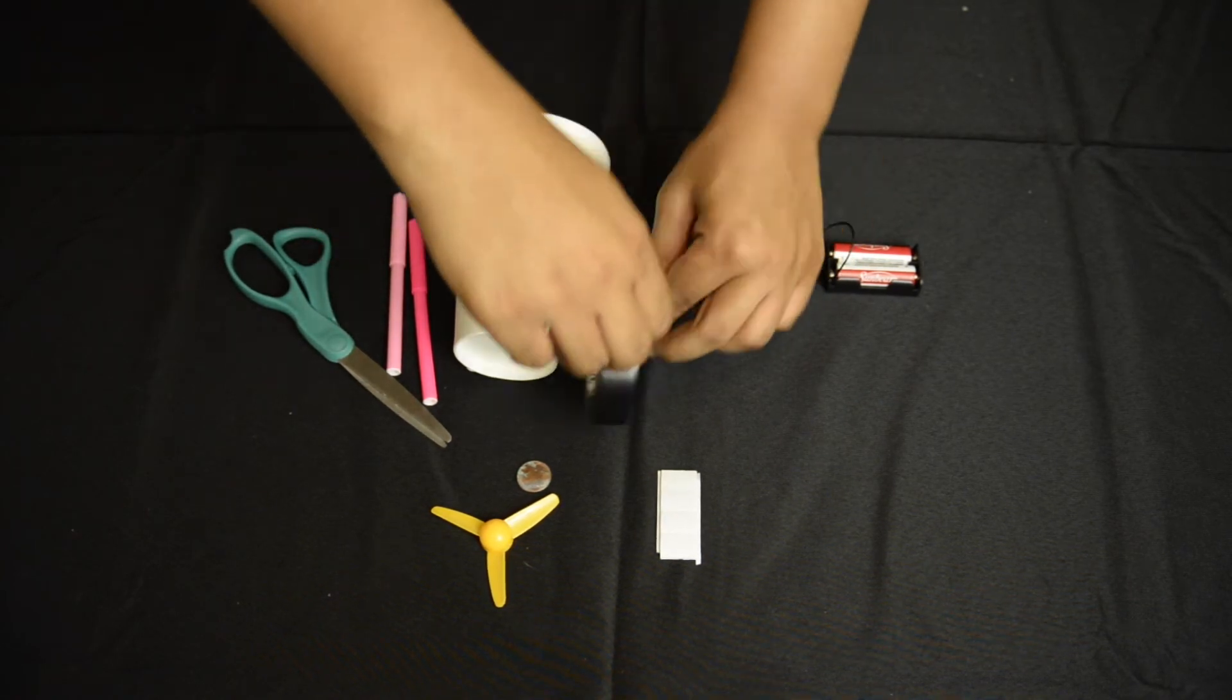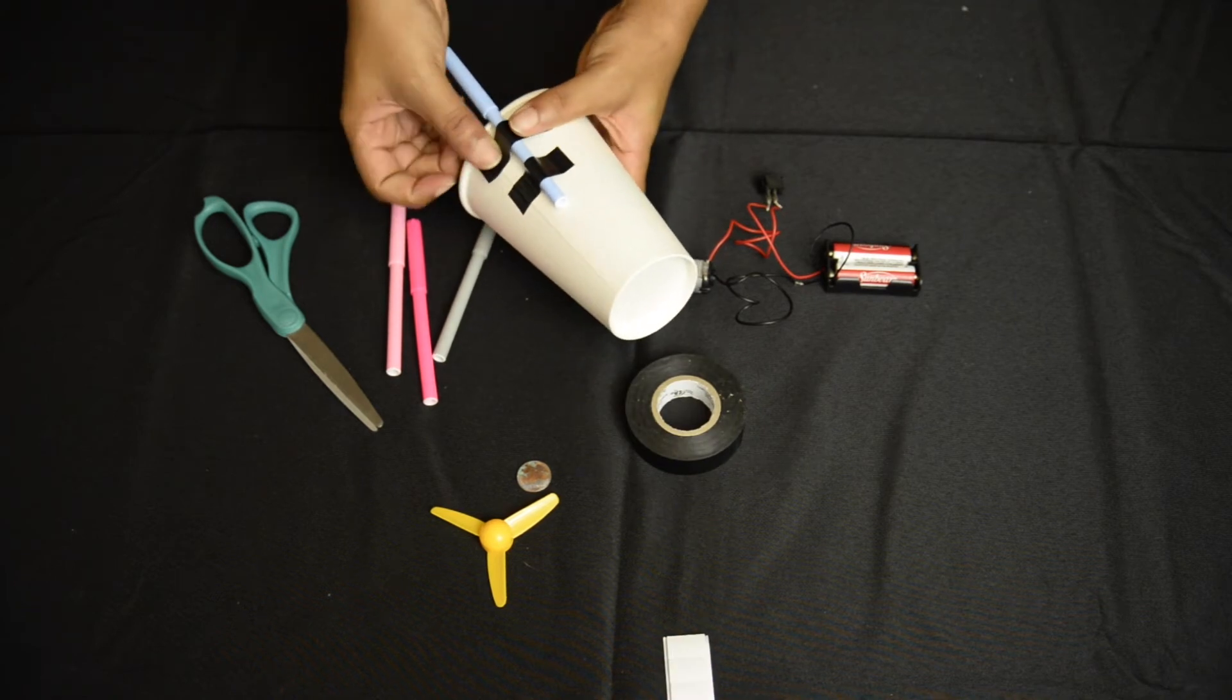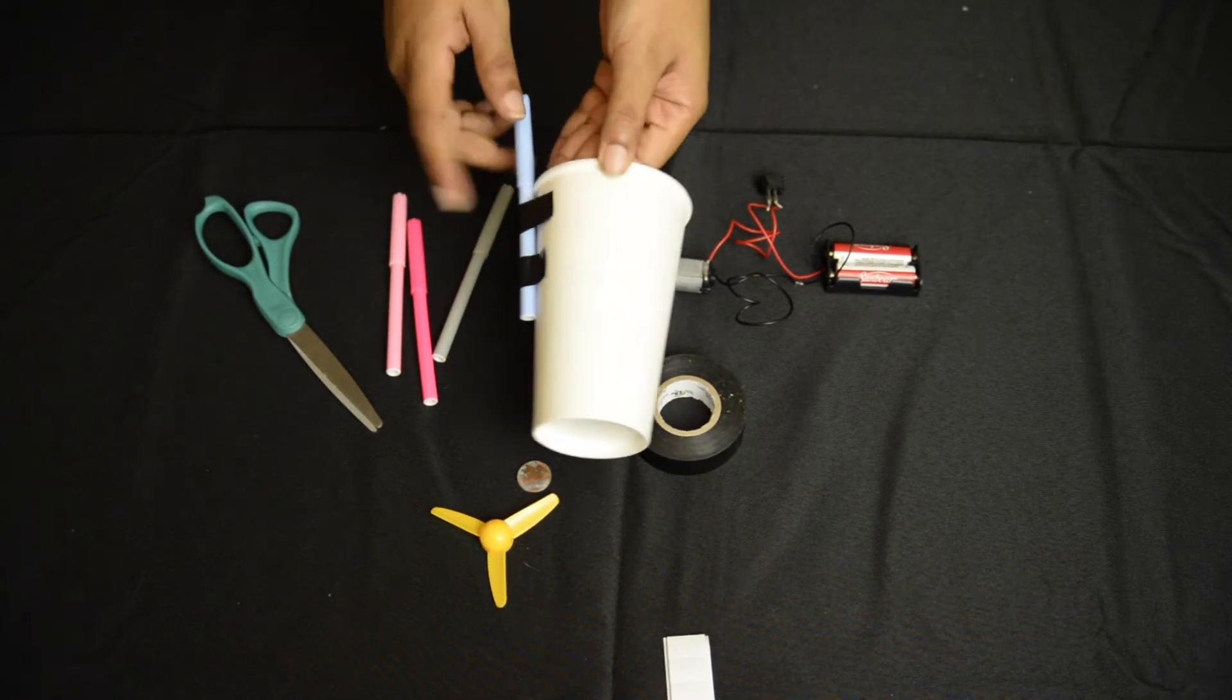Now make sure to use two pieces of tape per marker, placing one near the cup opening and one near the top of the marker.